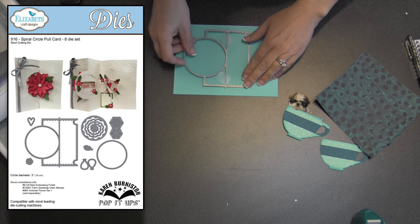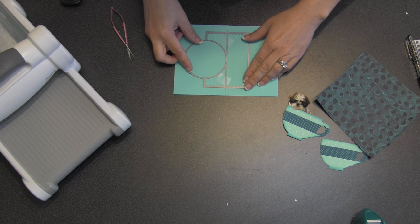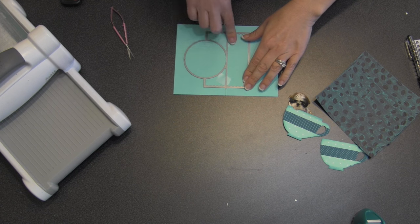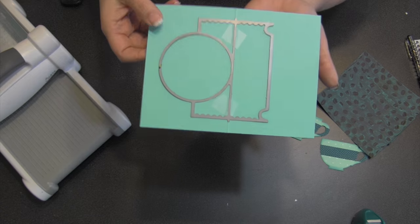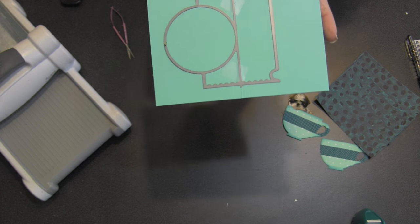And then all I'm going to do is line up my pull card die using the alignment nubs right over the fold of that card. Now that can be lined up anywhere along the fold. I'm going to pretty well center it top to bottom, but you could have chosen to put that higher, lower, anywhere along the fold, just use the nubs to line it up.